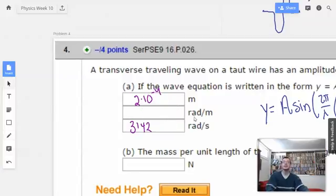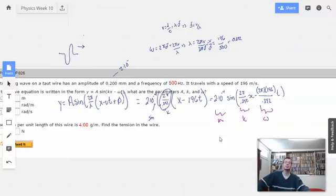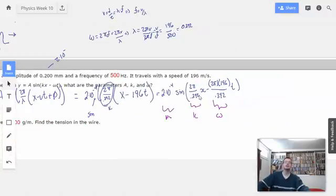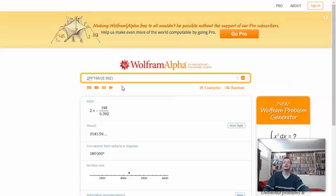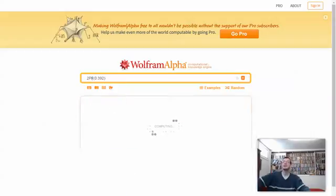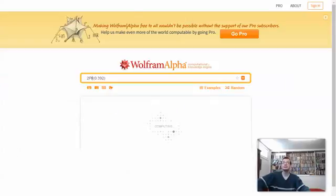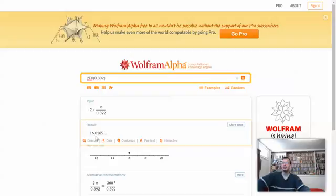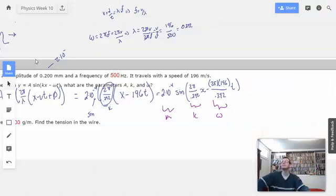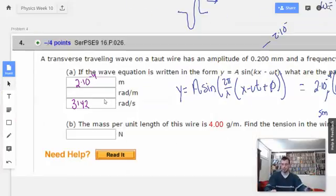To find K, which is measured in radians per meter, 2 pi divided by 0.392. And we have 16. So it's 16 radians per meter.